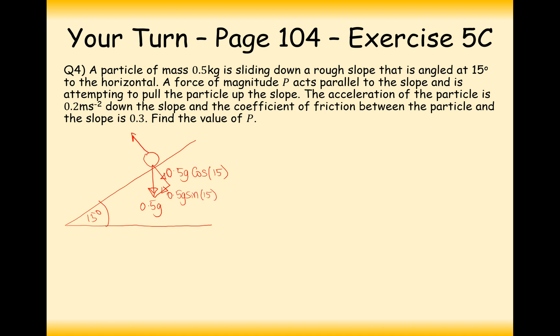Then my resolved forces are going to be 0.5 g cos 15 and 0.5 g sin 15. I'm going to have this R force, the reaction force, acting in the opposite direction to that. And I'm also going to have a force of magnitude P acting up the slope, trying to pull the particle up the slope. But unfortunately, the acceleration is going to go down the slope by 0.2 metres per second squared. And the coefficient of friction is 0.3. In this case here, we have a particle that is wanting to travel down the slope. So we have friction as the force that's going to be acting up the slope. We have two forces up the slope and one force of weight acting down the slope.